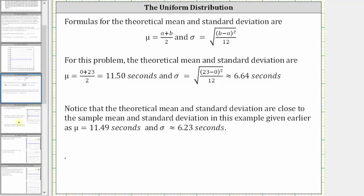The formulas for the theoretical mean and theoretical standard deviation are shown below, which means for our example, where again a is equal to zero and b is equal to 23, the theoretical mean is equal to 11.50 seconds and the theoretical standard deviation is approximately 6.64 seconds.